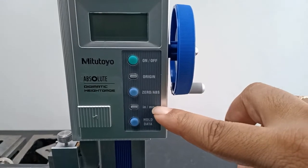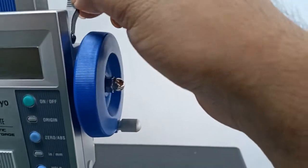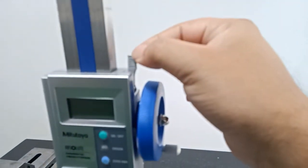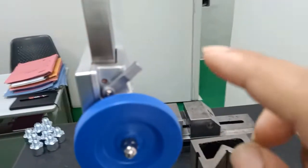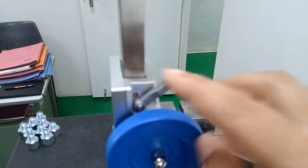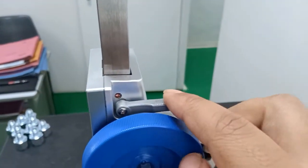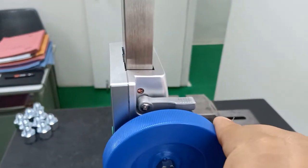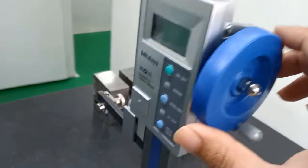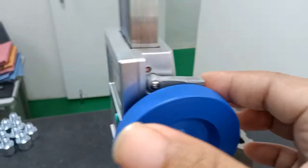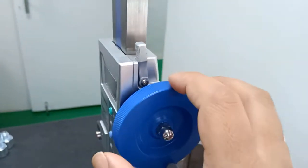This is lever for locking. You can see the lever, this is for lock. When you put it down, the scriber will lock, and if you put it up, the height gauge will unlock.